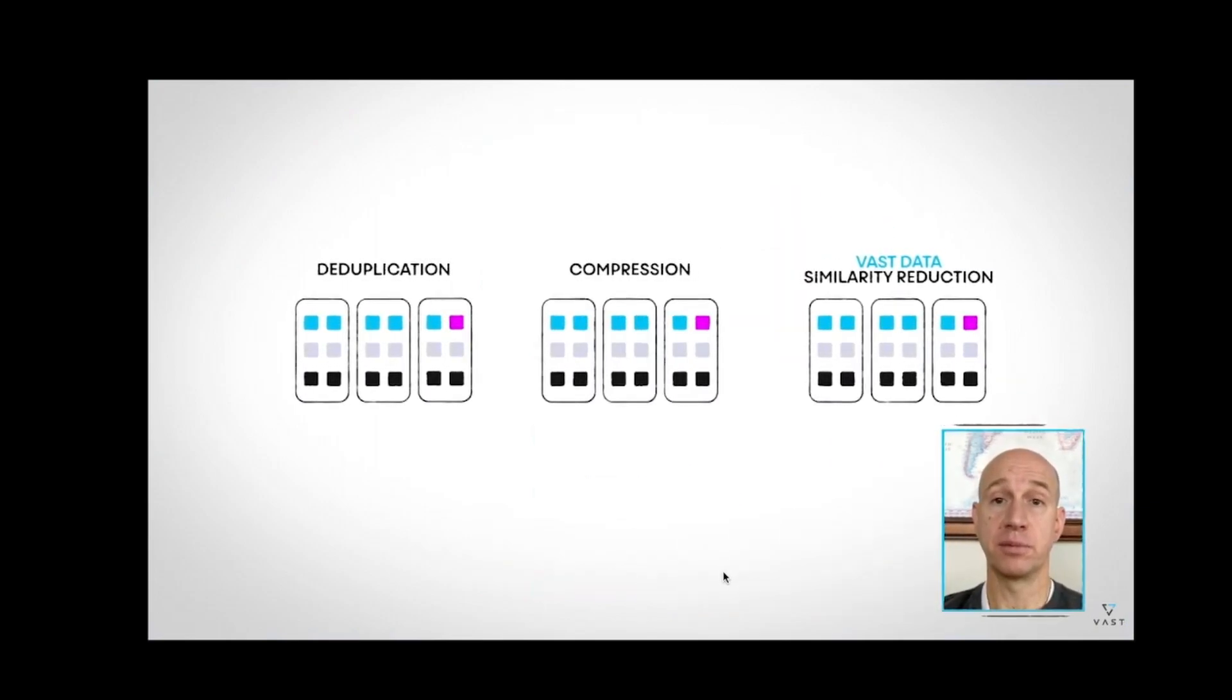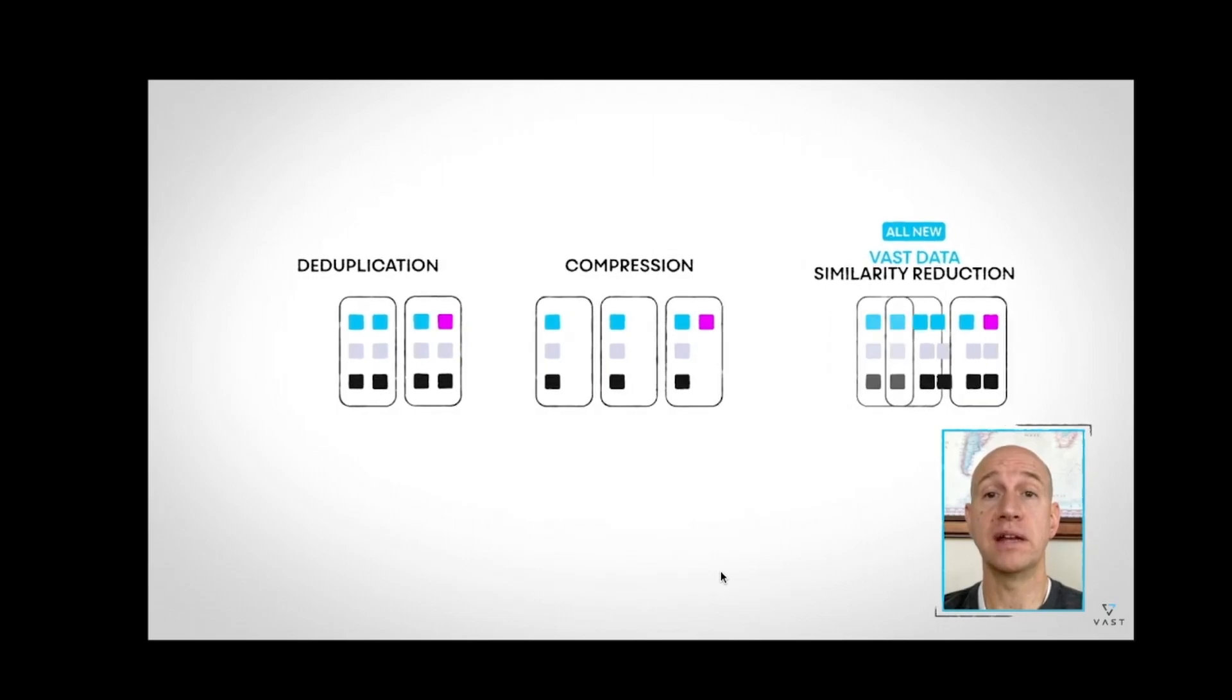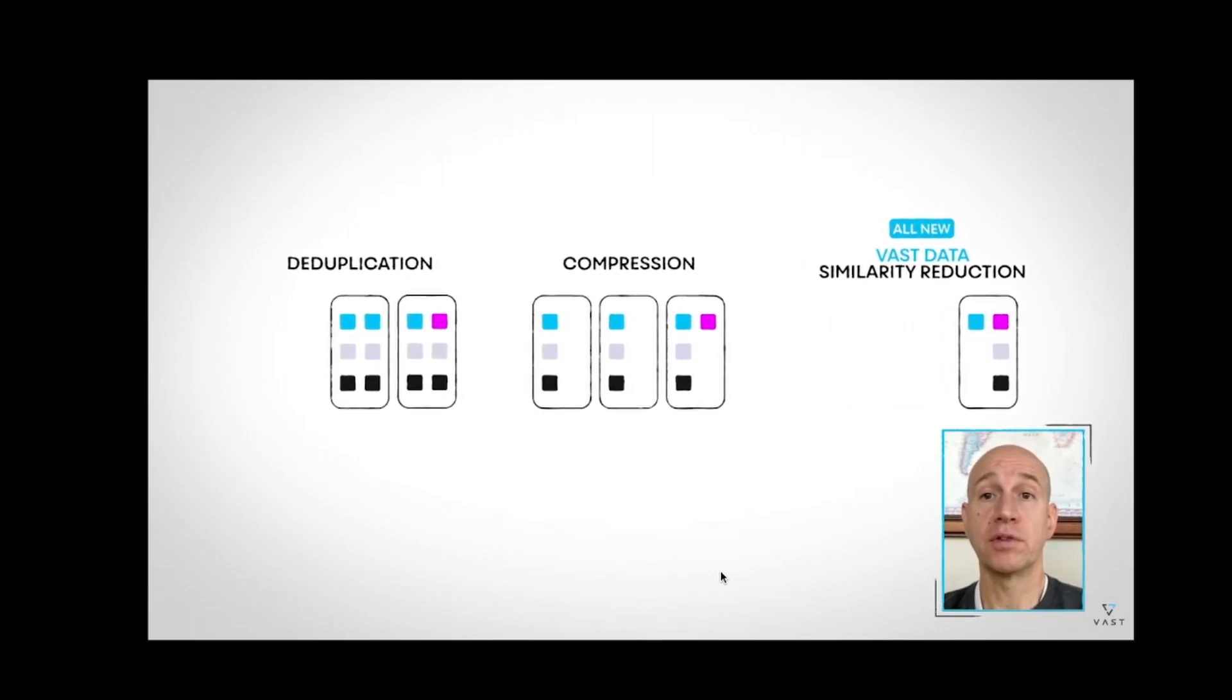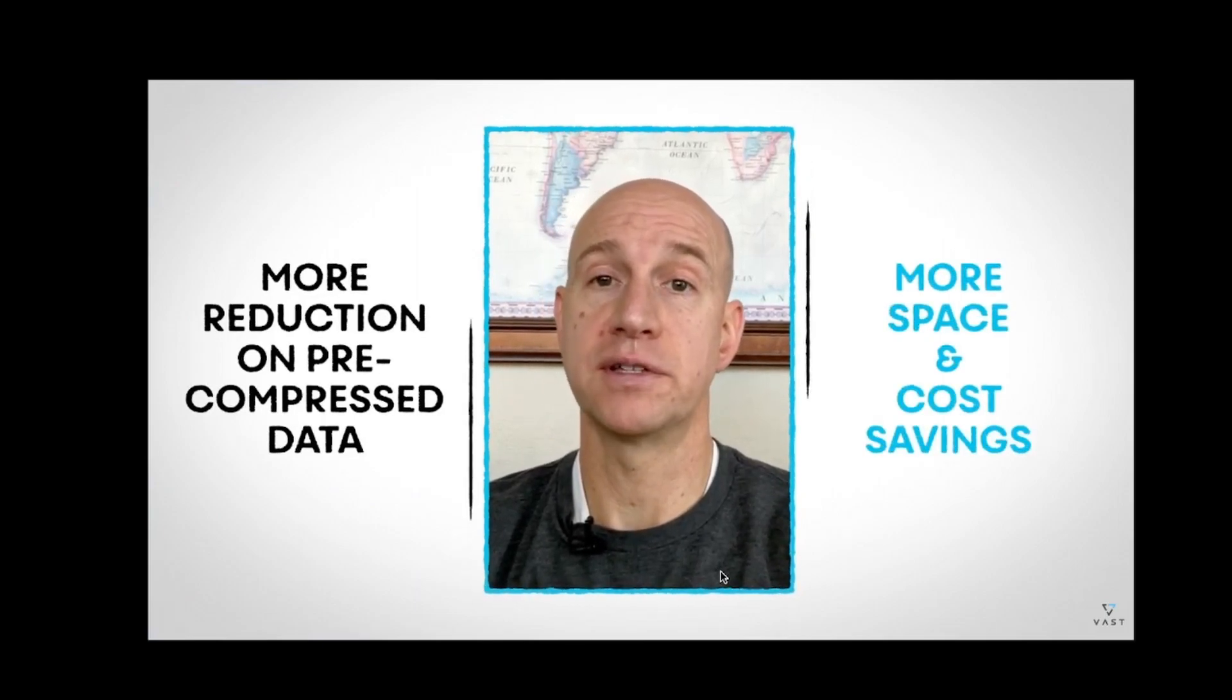One of VAS's major values is data reduction algorithms like data deduplication, compression, and data similarity reduction. Those combined give us more reduction on already compressed data, all of which helps us keep down our storage utilization.